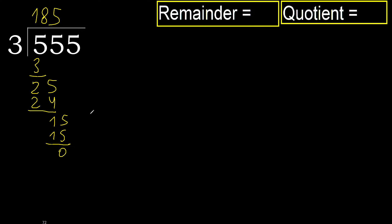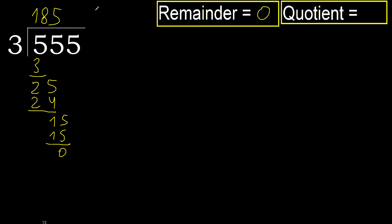That is not a number, therefore finish. 555 divided by 3 equals 185. Thank you.